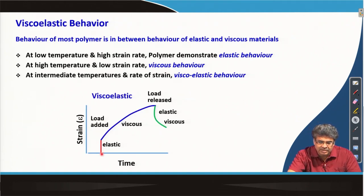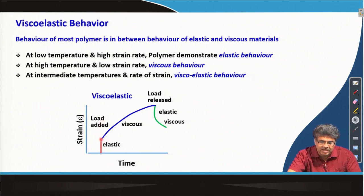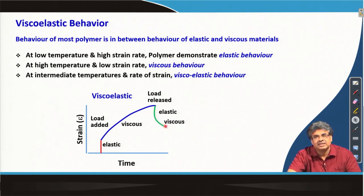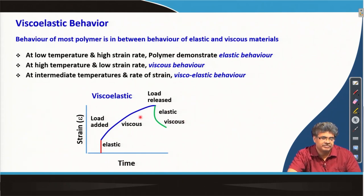If we apply a load, the material deforms partly. If it were a perfect elastic solid it would deform immediately to a higher extent, but because it is viscoelastic it partly deforms immediately and deformation continues while the load is applied. Once the stress is released, it immediately recovers some of its deformation like an elastic solid, but because of its viscous behavior it shows some permanent deformation. So it shows both elastic and viscous components, recovering partly and permanently deforming partly as well.